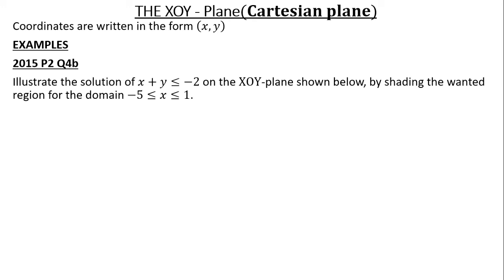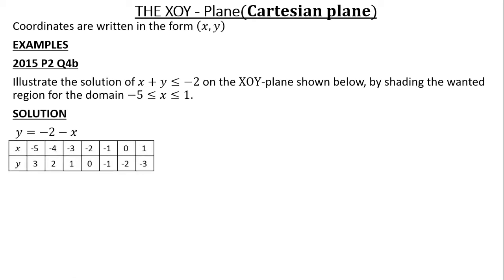So what you are going to do is: X plus Y less than or equal to negative 2 — make Y the subject of the formula. Where there's less than or equal to, replace it with equals. So we are going to say Y is equal to negative 2 minus X. When you transpose this X and take it to the right-hand side, the sign has to change — it will become a negative X. So what we are going to do is draw a table of values.